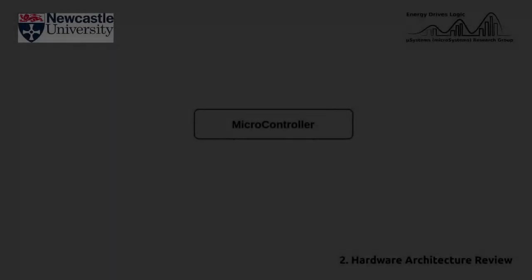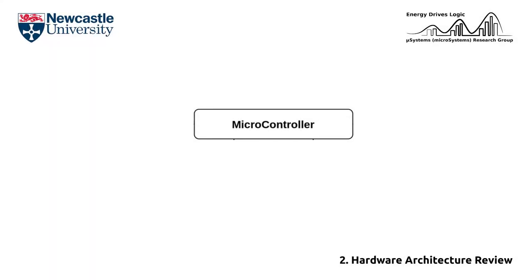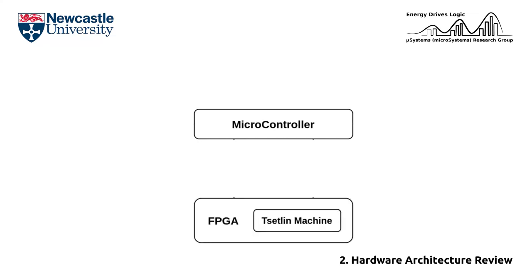This design contains two main devices: a microcontroller that is able to send the dataset and receive learning outcomes from the Saturn machine, and an FPGA which contains the Saturn machine that is able to generate learning outcomes based on the received data. The microcontroller and FPGA can communicate with each other through a protocol. The microcontroller will send literals to the Saturn machine, and the machine will return back the learning outcome.